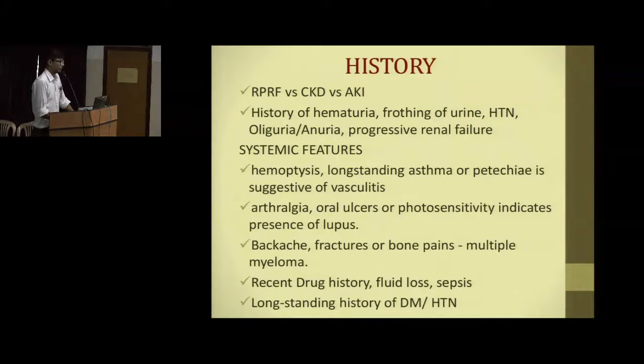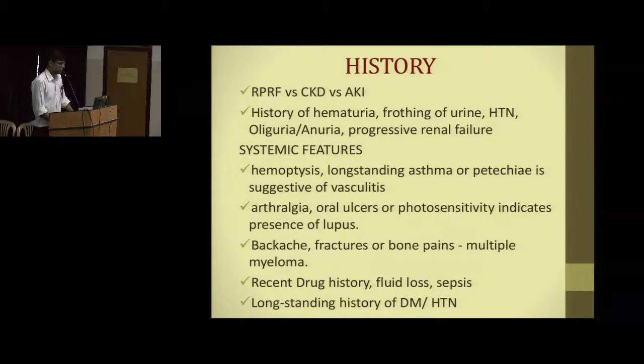The challenge is to differentiate between RPRF, CKD, and AKI. On history, hematuria or frothy urine may indicate rapidly progressing renal failure. Oliguria and anuria are also clues. Asthma, epistaxis, or hemoptysis could suggest vasculitis. Photosensitivity or oral ulcers suggest SLE. Back pain and bony pain with fractures suggest multiple myeloma. Nephrotoxic drug history should be considered, as should long-standing hypertension and diabetes.